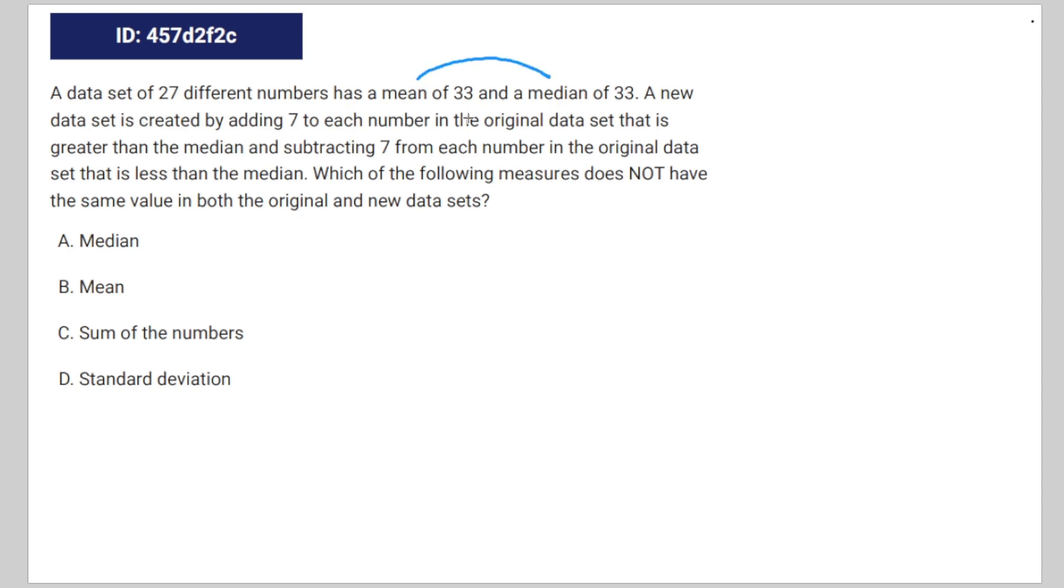A new data set is created by adding 7 to each number in the original data set that is greater than the median and subtracting 7 from each number in the original data set that is less than the median. Which of the following measures does not have the same value in both the original and new data sets? So this is kind of hard to conceptualize because there's so many numbers.